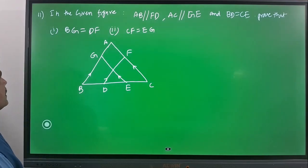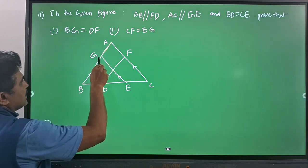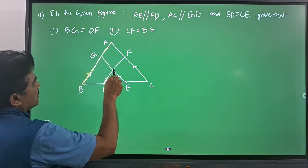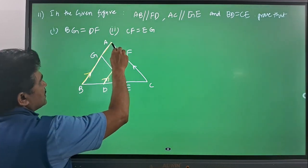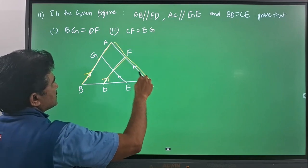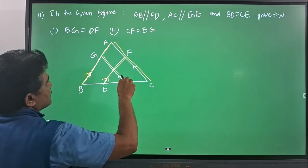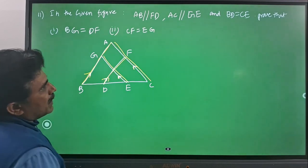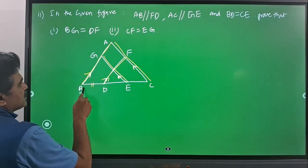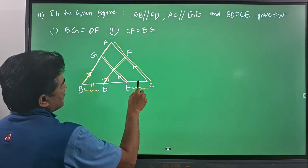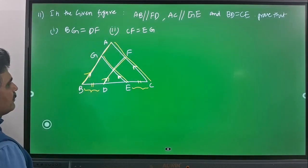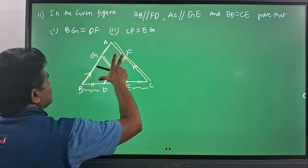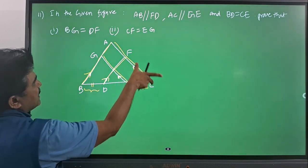Our next question is: in the given figure, AB is parallel to FD, AC is parallel to ZE, and BD is equal to CE. We need to prove that BZ is equal to DF, and CF is equal to ED.